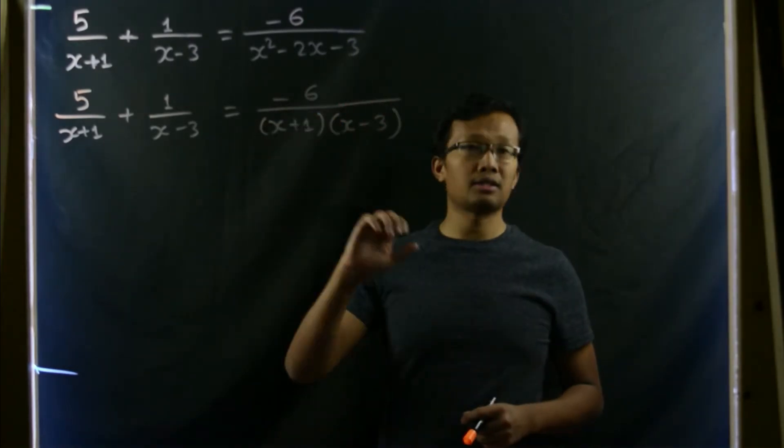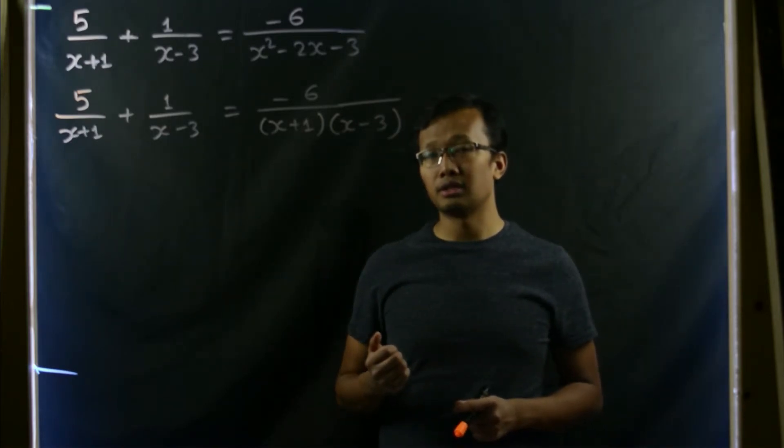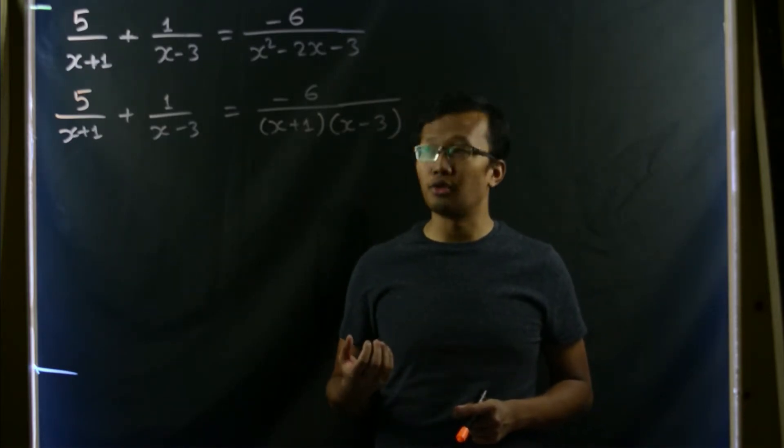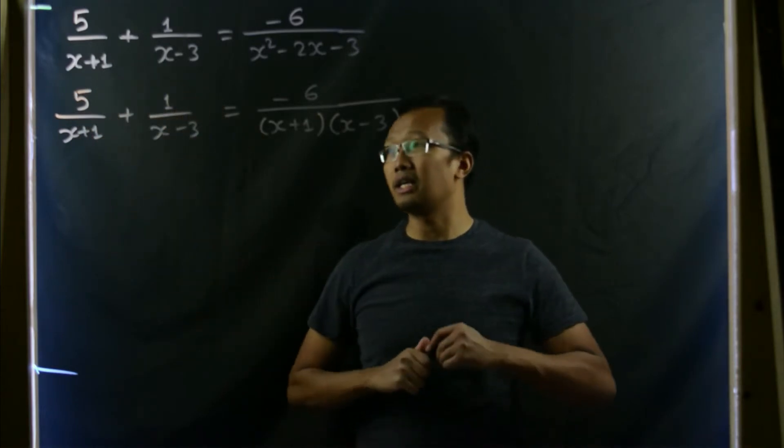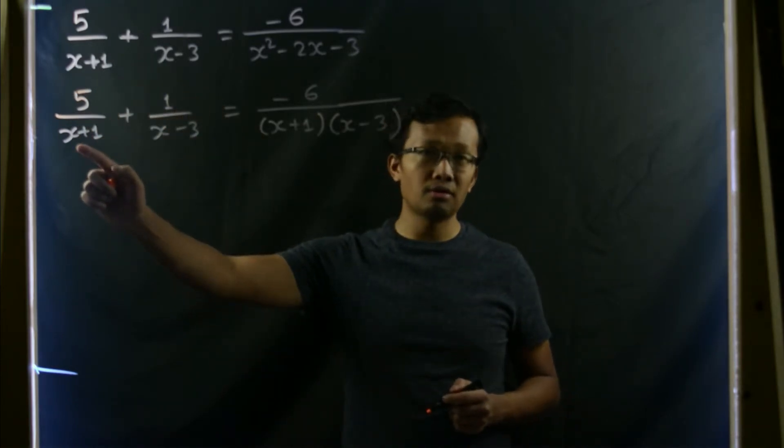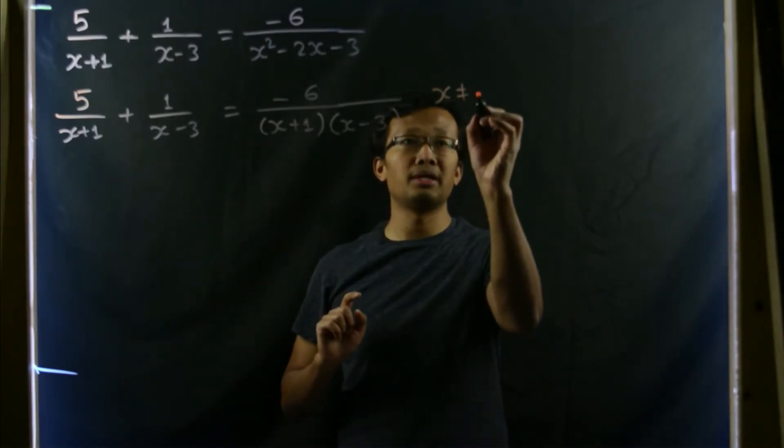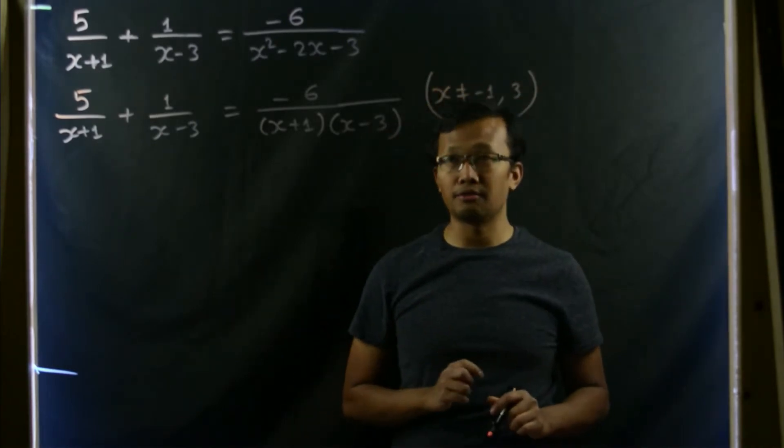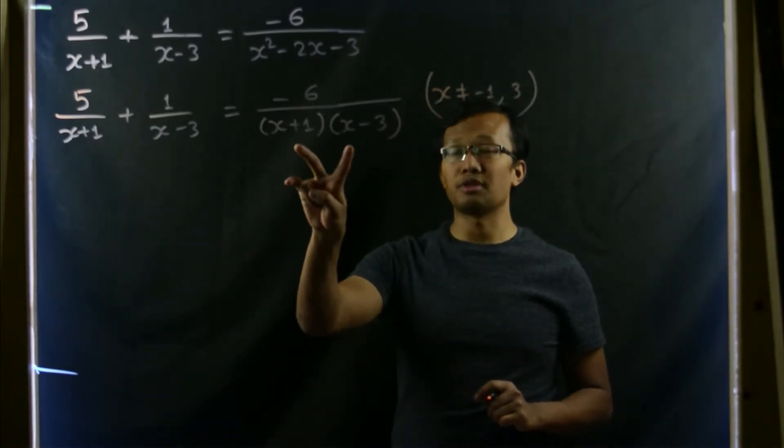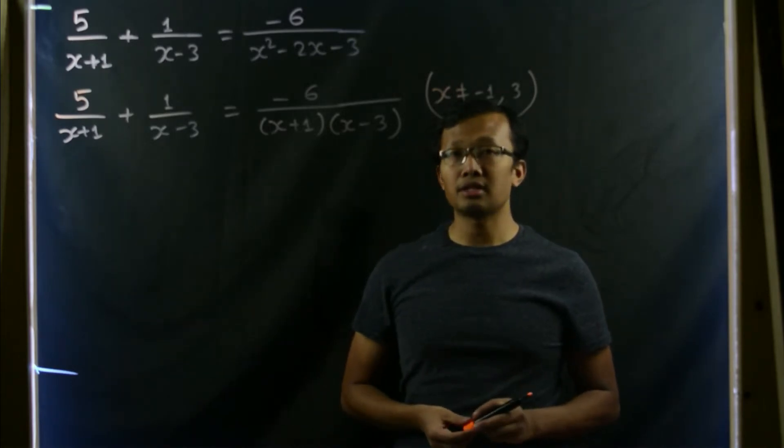In this rational equation, the values of x that you should avoid such that these expressions won't be infinities are simply x equals to -1, x equals to 3. So x should not be equal to -1 and 3. We must be careful about that. Now let us solve this equation.